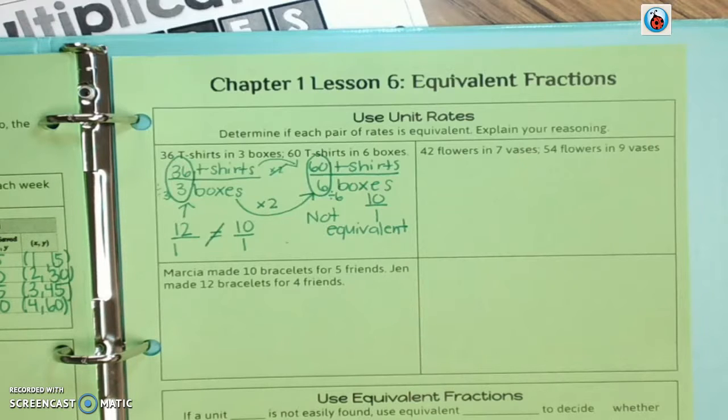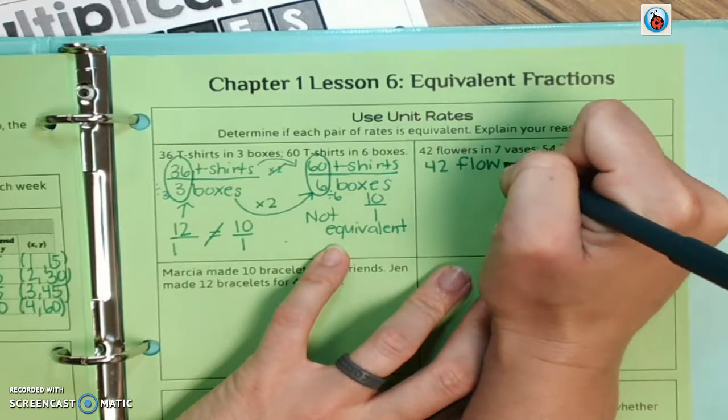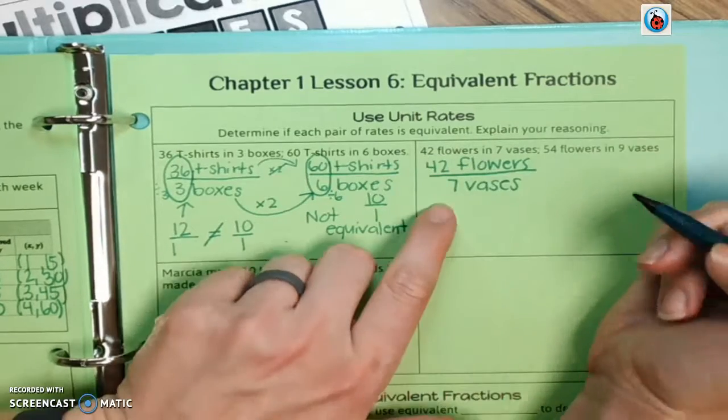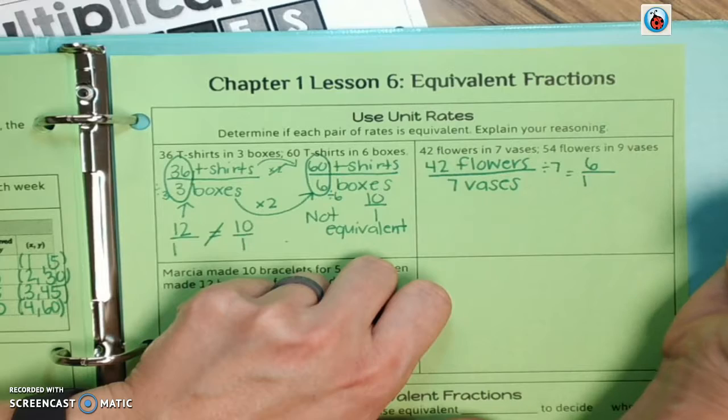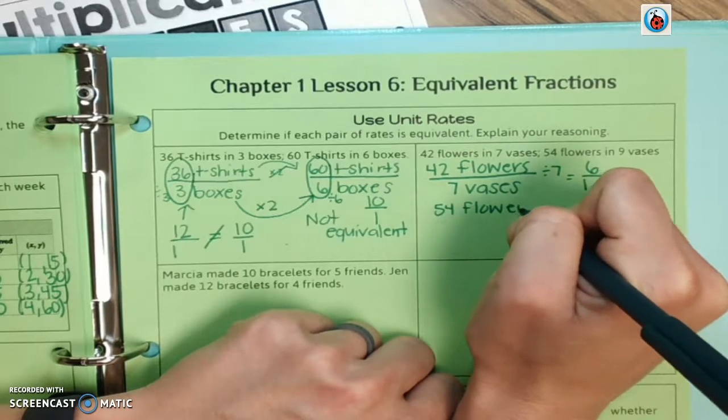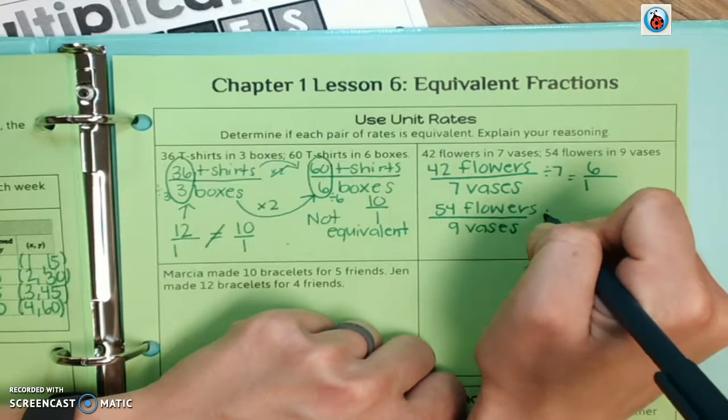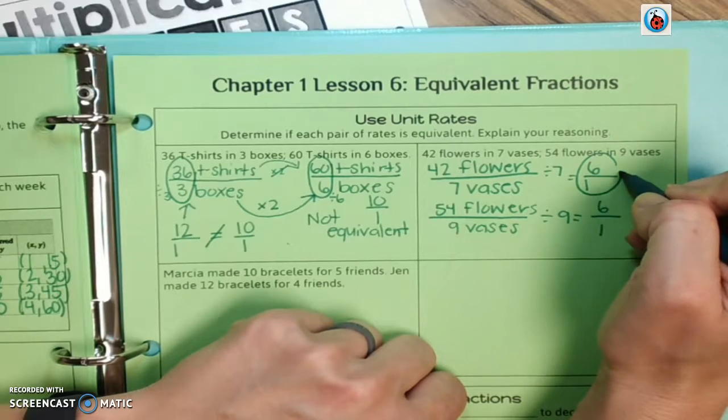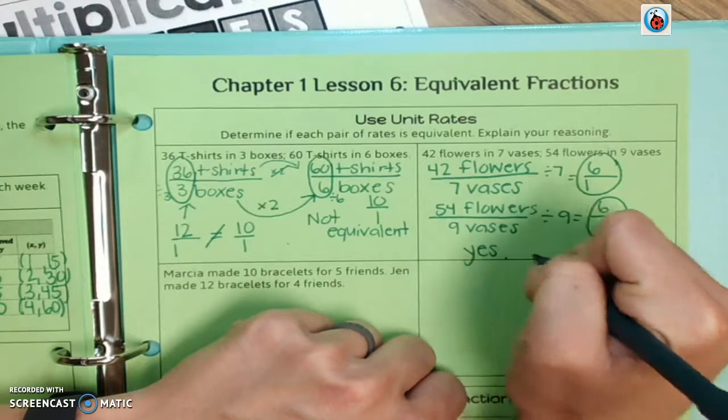Let's look at the next one. We have 42 flowers and 7 vases, so 42 flowers over 7 vases. To do the unit rate, we divide by the bottom number. 7 divided by 7 is 1, 42 divided by 7 is 6. Let's set up the next one. We have 54 flowers over 9 vases. 9 divided by 9 is 1, 54 divided by 9 is 6. Because this unit rate and this unit rate are the same, then yes, they are equivalent.